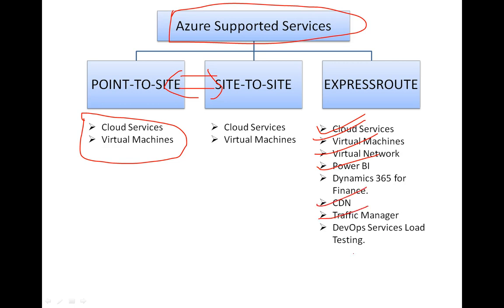DevOps service, load testing, and many more services. So ExpressRoute has a bit more power, as you can see. But again, it is a question of scenario and requirement. If you don't need ExpressRoute, you should not use it. If you only need Point-to-Site, you can configure that. It depends on the requirement — if you use ExpressRoute when it's not needed, you will pay more, because whatever we use on Azure, we have to pay.